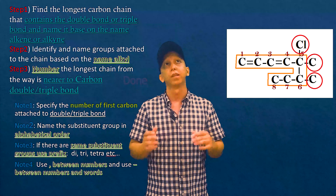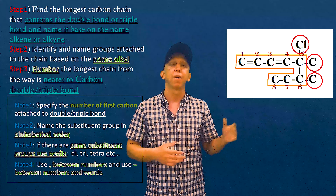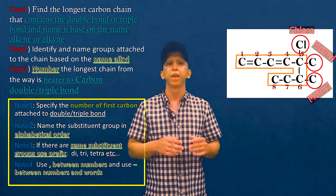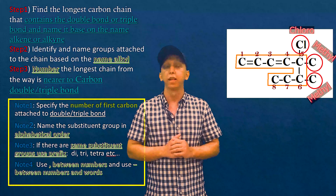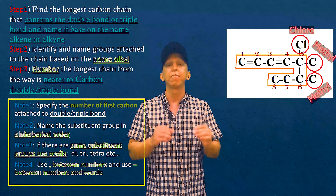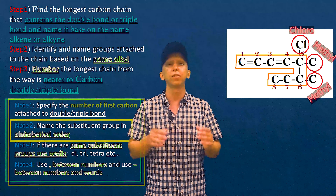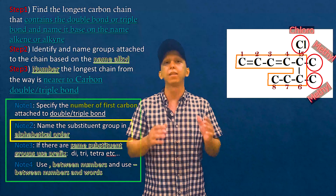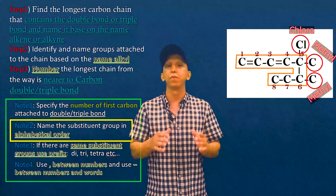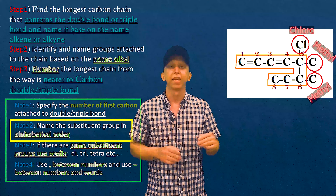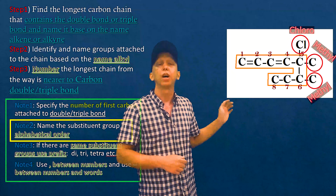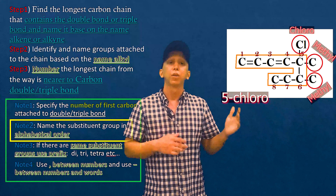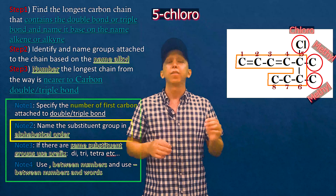Now it's time to name our chain. We have to start naming from the substituent groups. In here we have a chloro and two methyls. We have to start naming from the substituent group that is closer to 'a' in alphabetical order. Chloro starts with 'c' and methyl starts with 'm', so 'c' is closer to 'a'. It is attached to carbon number five, so we write 5-chloro.